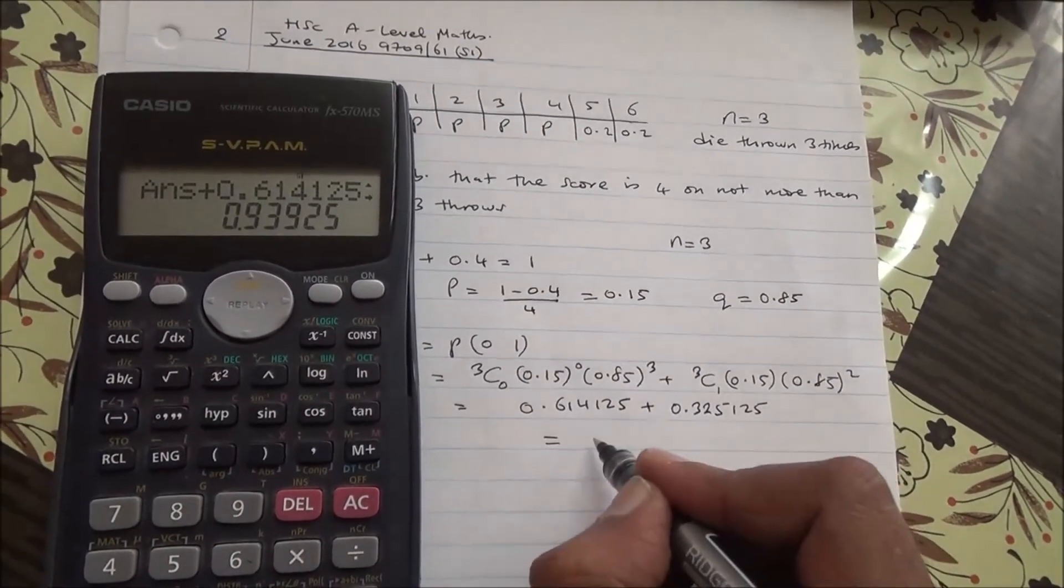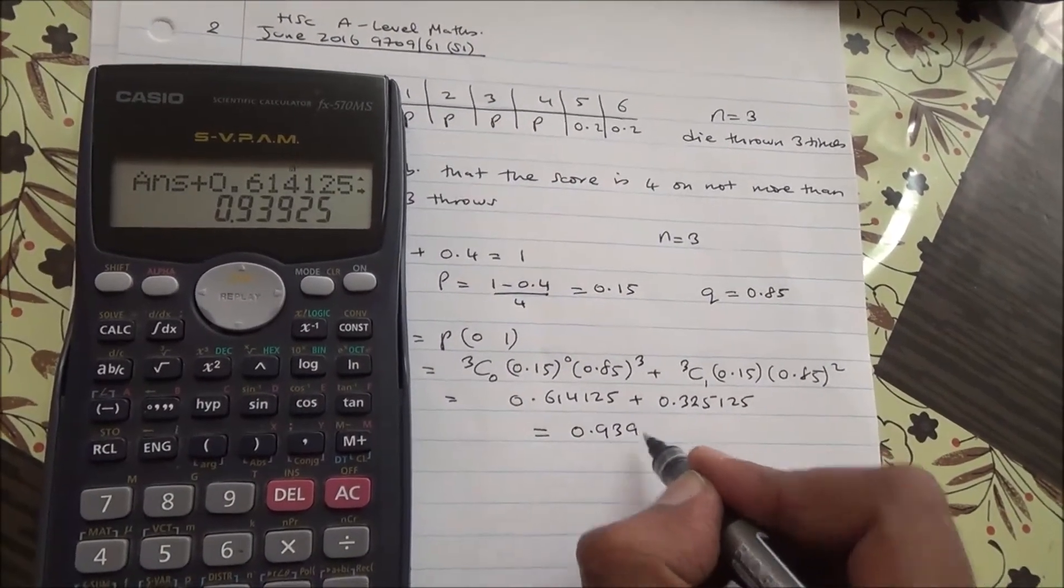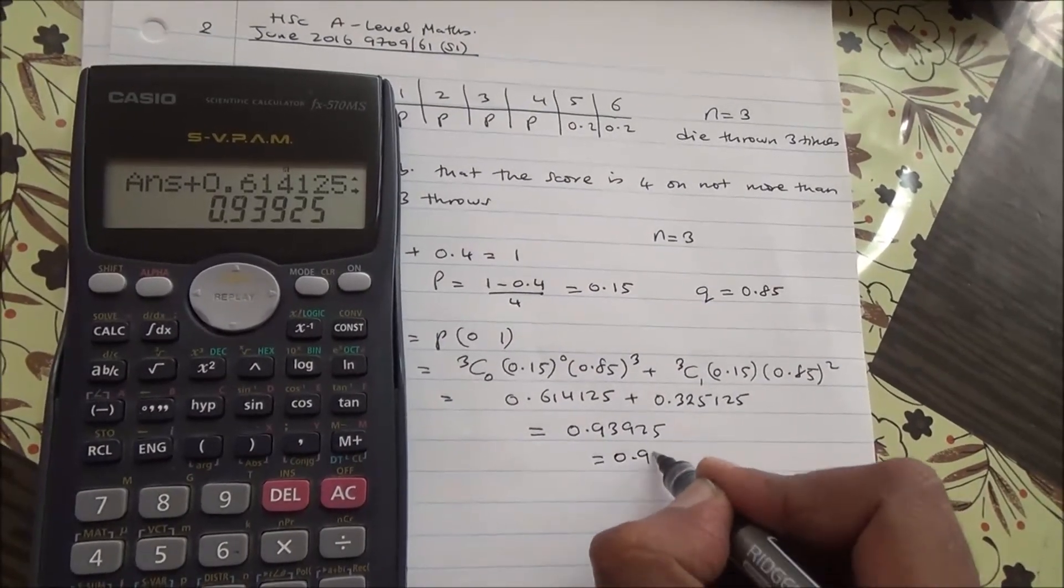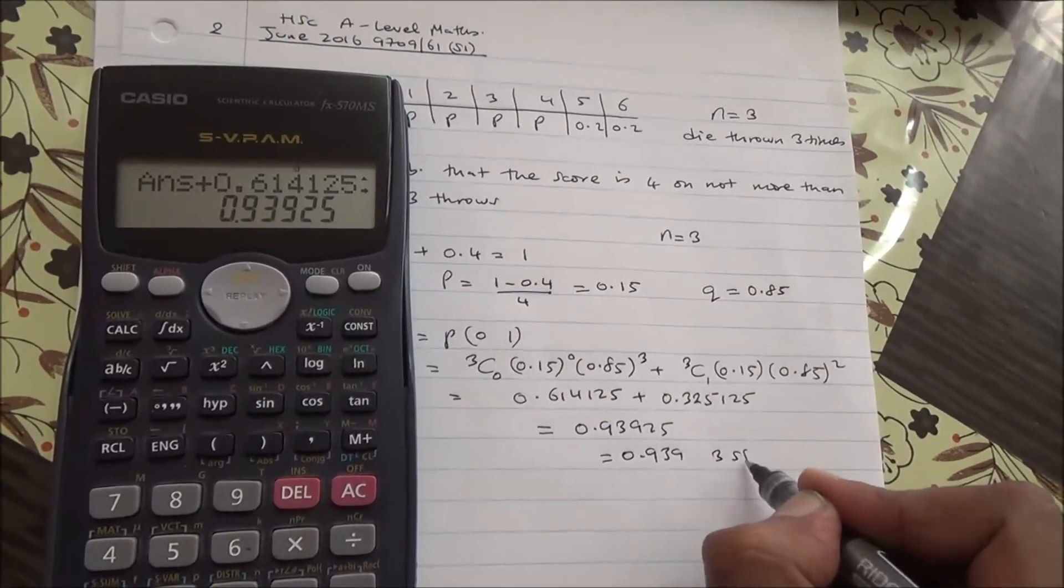Your answer should then be 0.93925, and therefore 0.939 to 3 significant figures.